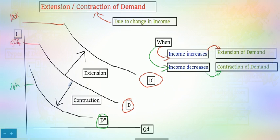When income is reduced, say to 20k, the consumer will buy less quantity, so the quantity demanded will be very low — this is called contraction of demand. When income increases, extension of demand occurs; when income decreases, contraction of demand occurs. The key difference: when price changes, increase or decrease in demand occurs within the curve (movement along the curve); when income changes, the curve itself shifts upwards or downwards.